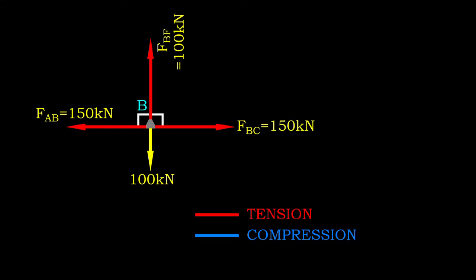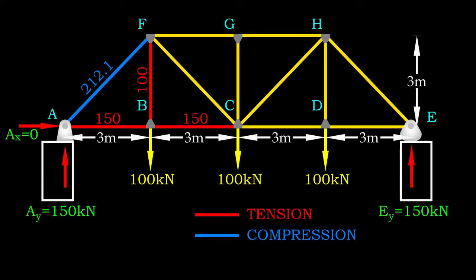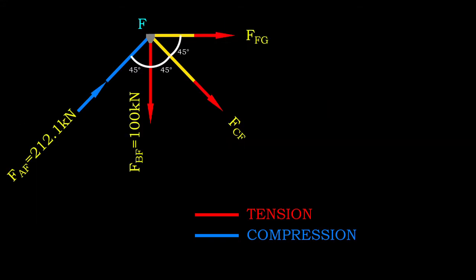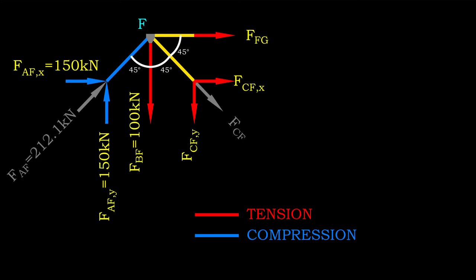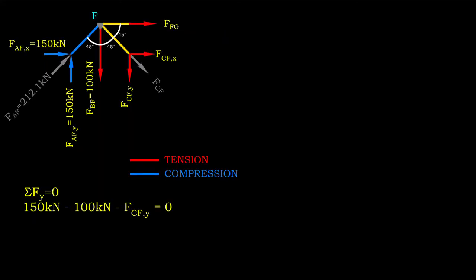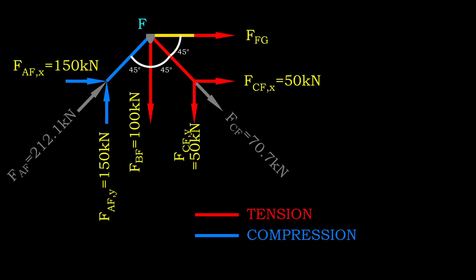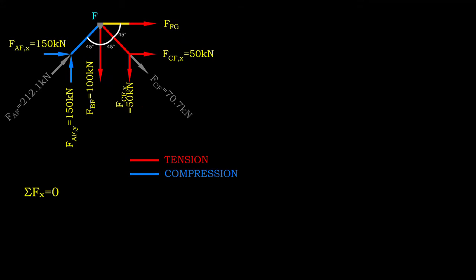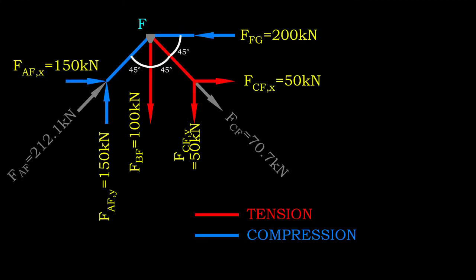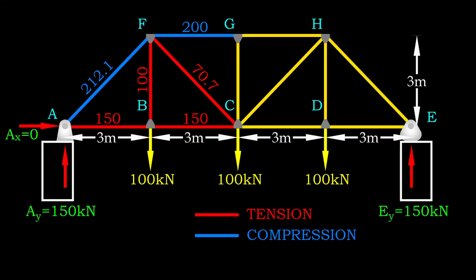Moving on to joint F. 70.7 kN of tension is developed in member CF to ensure forces along Y axis are in equilibrium. After that, let's solve for X components. From calculation, we know member FG has to be in 200 kN of compression.